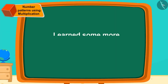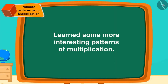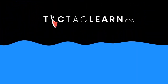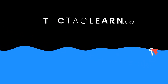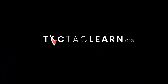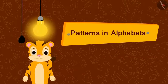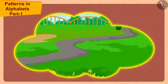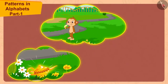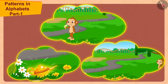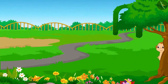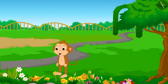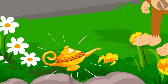In this lesson, we learned some more interesting patterns of multiplication. Hello, children. In this video, we will learn about patterns in alphabets. Children, do you remember how Babban found a lamp while roaming in the park one day? From that day till today, Babban must have made at least one round of the park daily. Even today, he has come to the park in search of the lamp. And today, Babban finally saw the lamp once again.